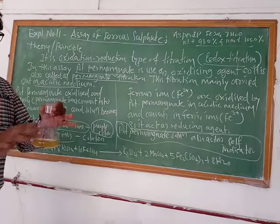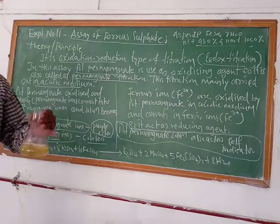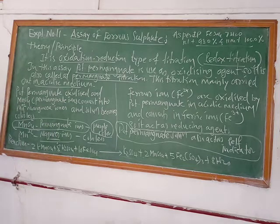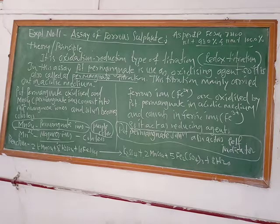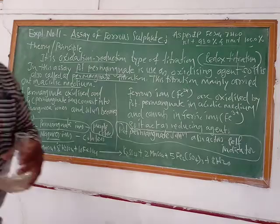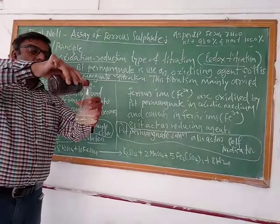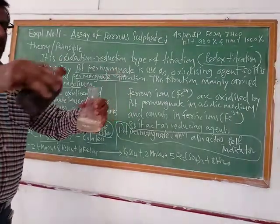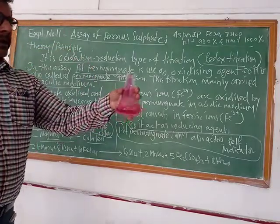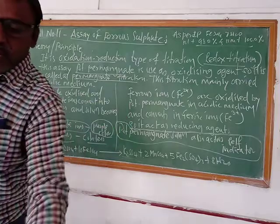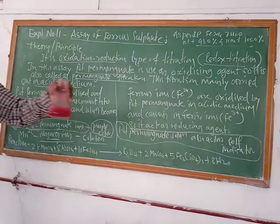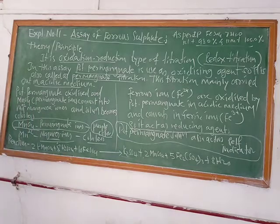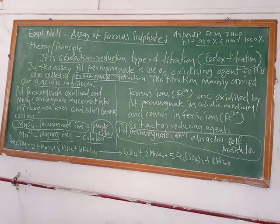When that reaction is completed, there is no ferrous sulfate left. What happens now — you add just one drop, which produces color in your solution, and your solution becomes colored. So that is the endpoint we are getting. By this way, that potassium permanganate solution acts as a self-indicator.